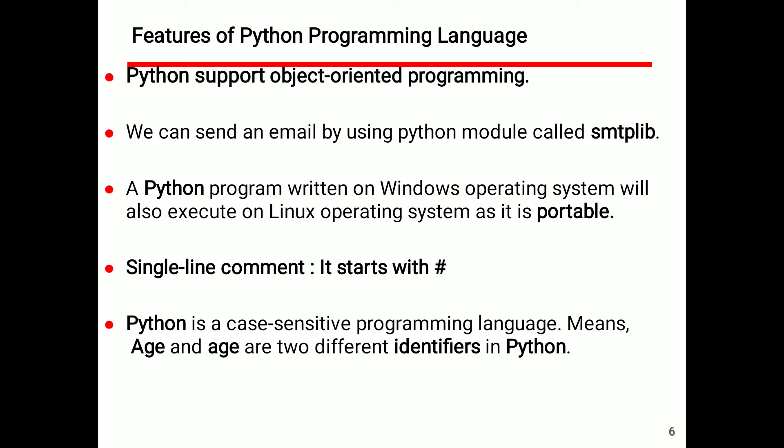Single-line comments start with a hash (#) symbol. Python is a case-sensitive programming language, meaning 'age' with capital AG and 'age' with small ag are two different identifiers in Python, because it can differentiate capital letters and small letters.